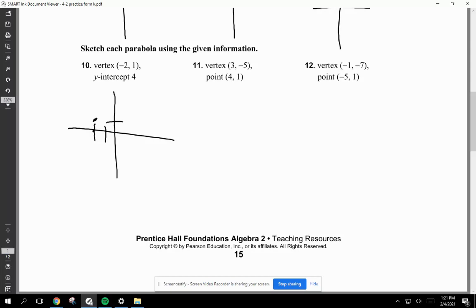The y-intercept is at 4. 1, 2, 3, 4. So we're going to say that this is going to be, right? There you go. This is the line that cuts it in half.